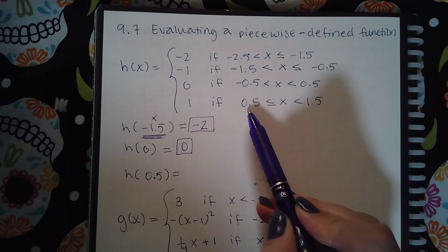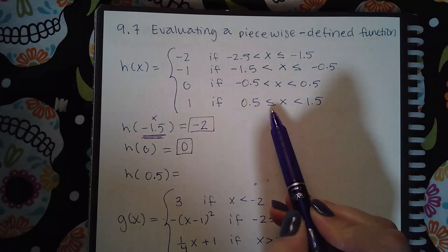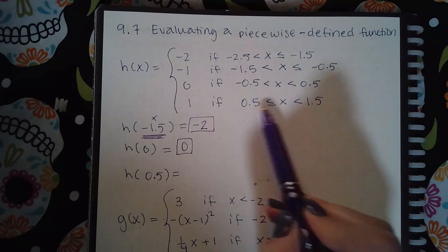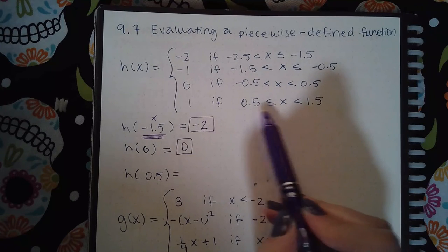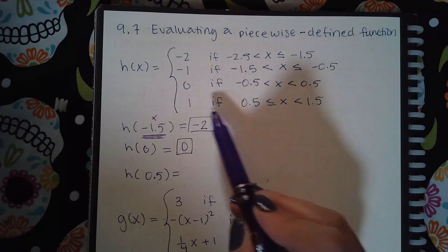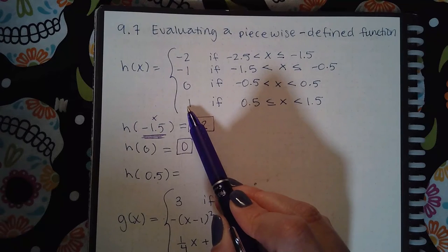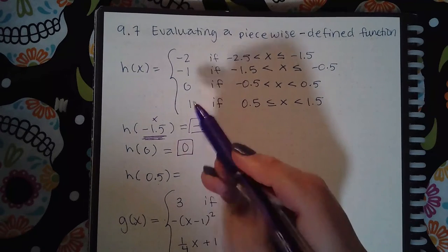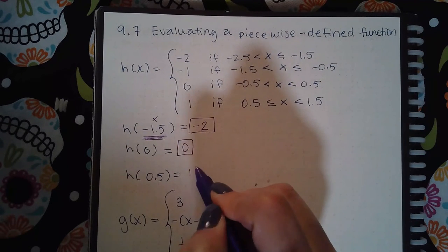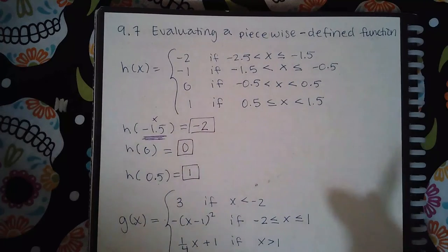And then 0.5 is in two places, it's in the third line and in the last line, but the last line is the one that includes 0.5, it equals 0.5. So I would have to use the last expression to find the y value, and since there's no x to plug that 0.5 into, the y value is simply just 1.